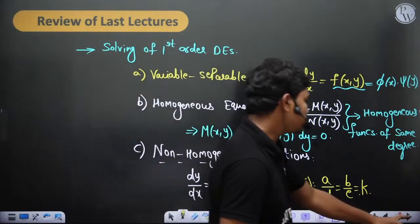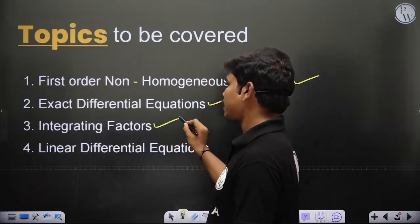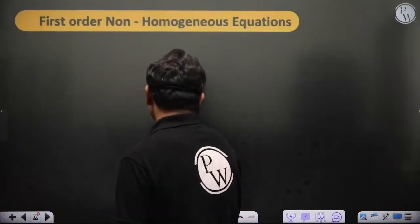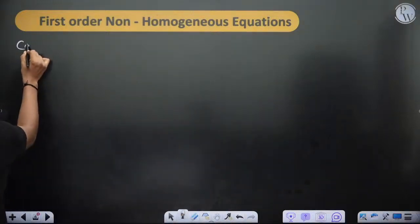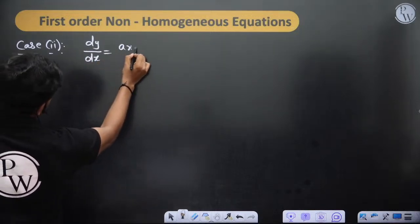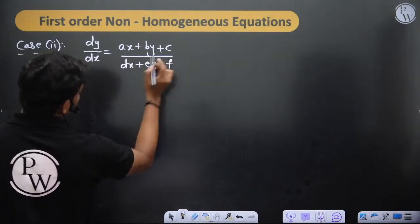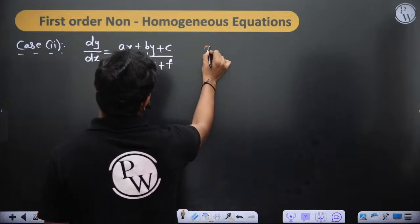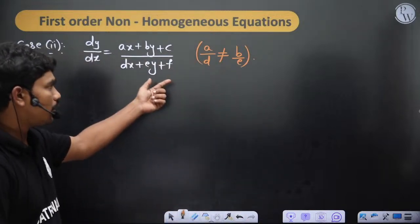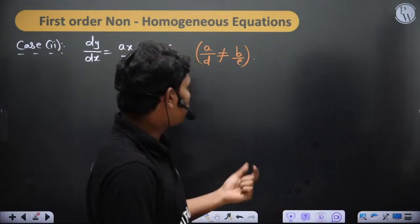In today's class, we'll first cover the remaining case of first order non-homogeneous equations, then move on to exact differential equations, integrating factors, and linear differential equations. The remaining case is case two: where a/d is not equal to b/e. That is the constraint — if they're equal we already know how to solve it, but now we handle when they're not equal.